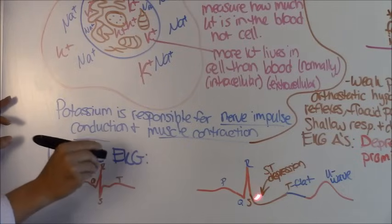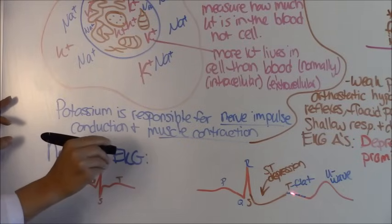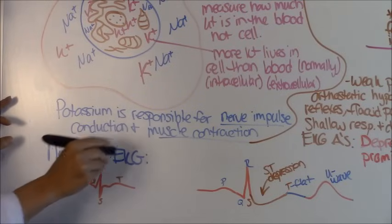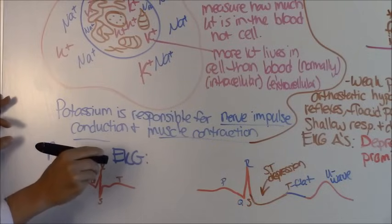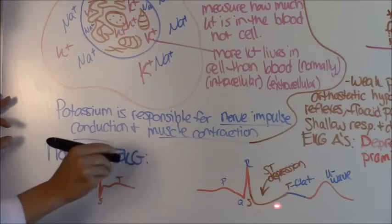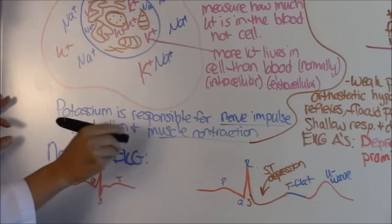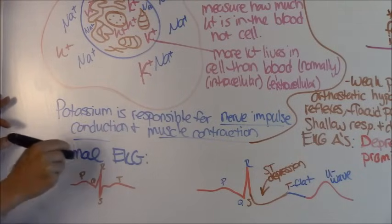So remember, once again, you're going to have a depressed ST depression, you may have a flat or inverted T wave, and you may have a U wave. I like to remember this: everything is slow and low in hypokalemia because hypo means low. So you're going to have a low ST depression, a flat or low T wave which is inverted or low, and then a prominent U wave. Those are just some tricks on how to remember it.